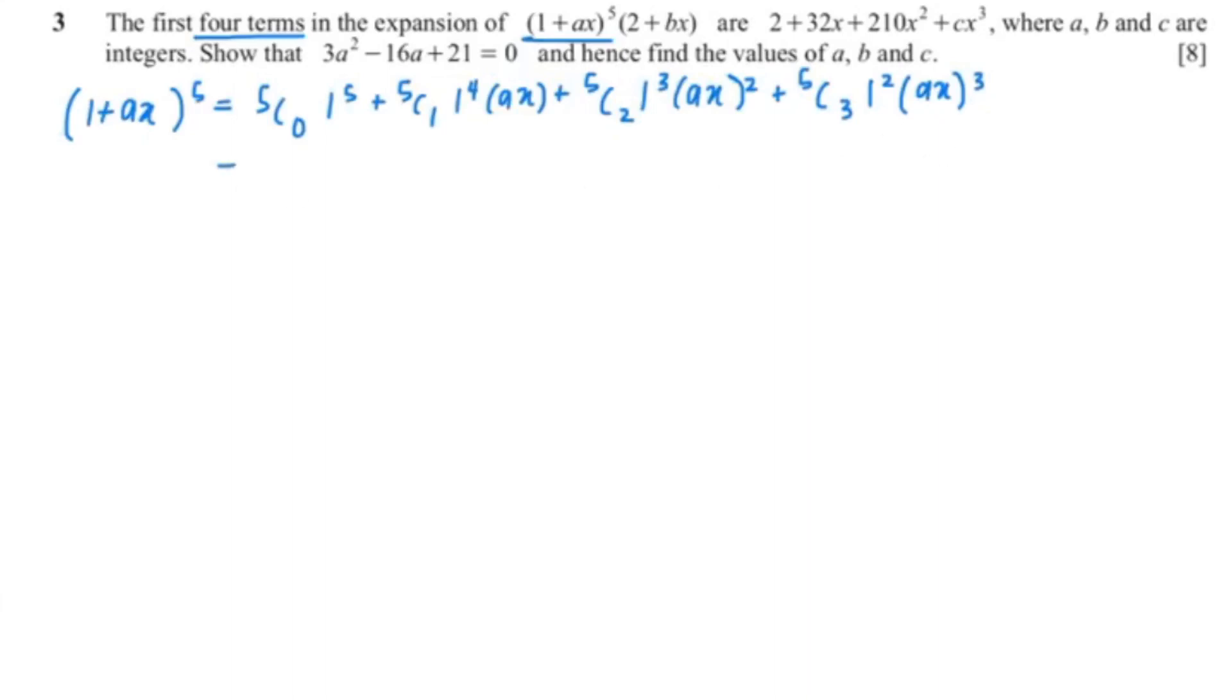So when you put these into your calculator you should get 1 plus 5ax plus 10ax squared plus 10ax cubed. Now I'm going to rewrite it so that's 1 plus 5ax plus 10a²x² plus 10a³x³. I'm going to multiply this with (2+bx).